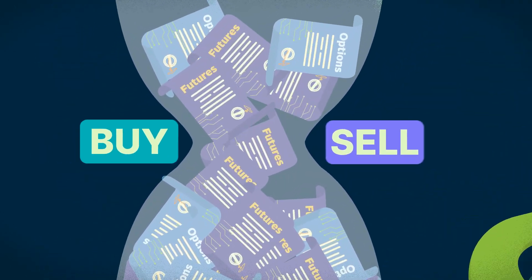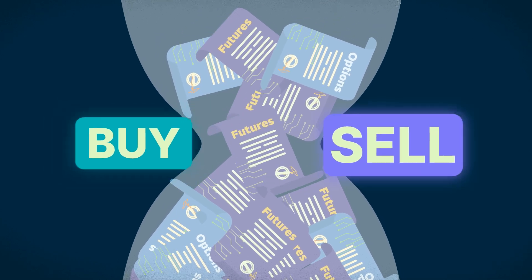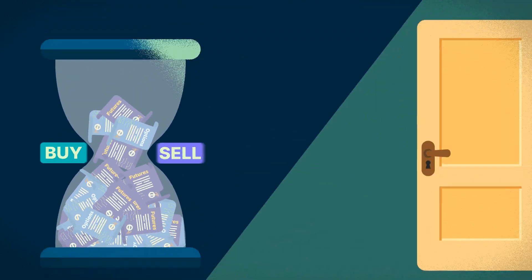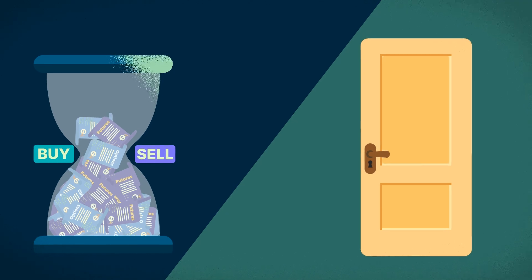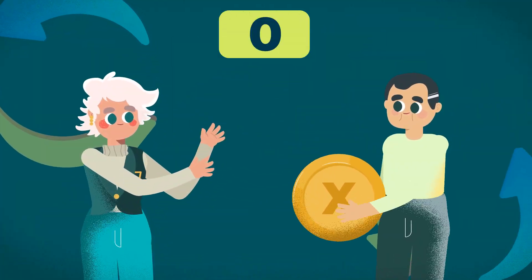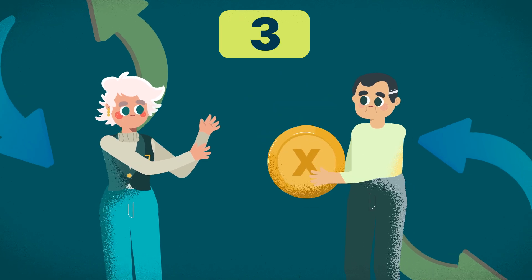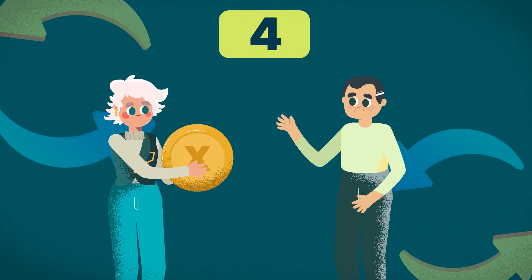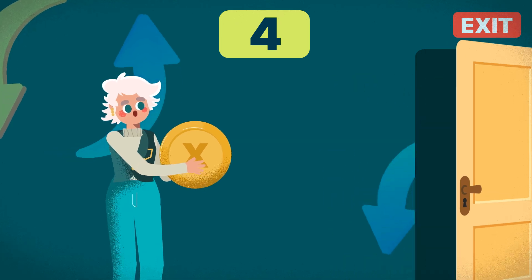However, volume takes into account every buy and sell in the market regardless of whether positions are being opened or closed. This means we are only seeing how much of an asset is traded, but not whether participants are entering into new trades or exiting altogether.